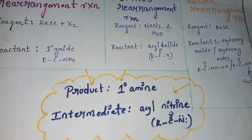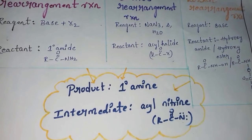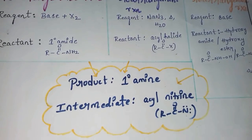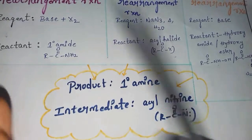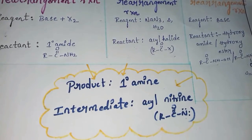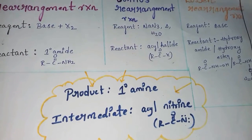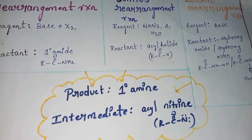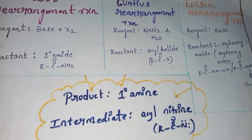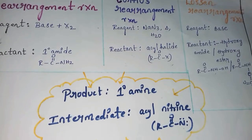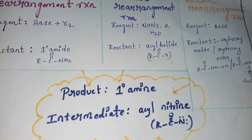The similarity across all three reactions is that the product is the same — primary amine — and the intermediate is acyl nitrene. After these reactions we get a primary amine. The definition of Hofmann rearrangement: a primary amide on reaction with base and halogen gives a primary amine. Similarly, definitions can be written for Curtius and Lossen.